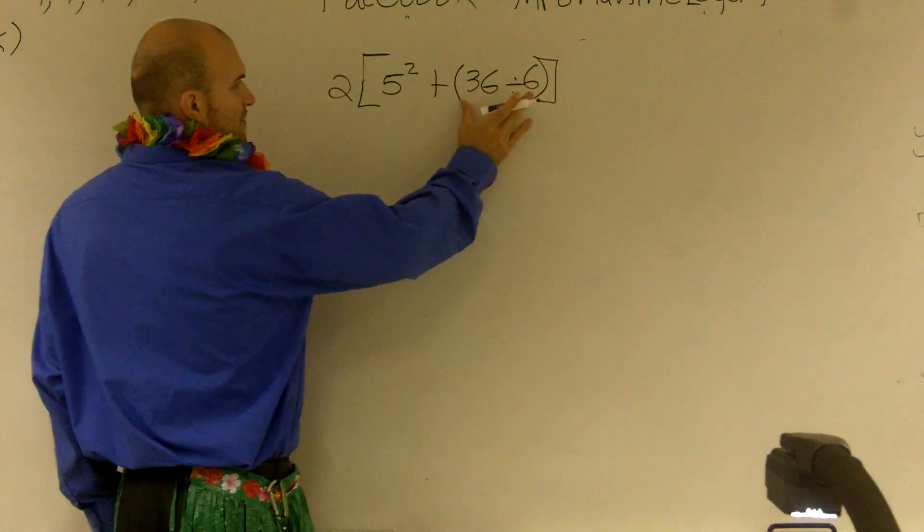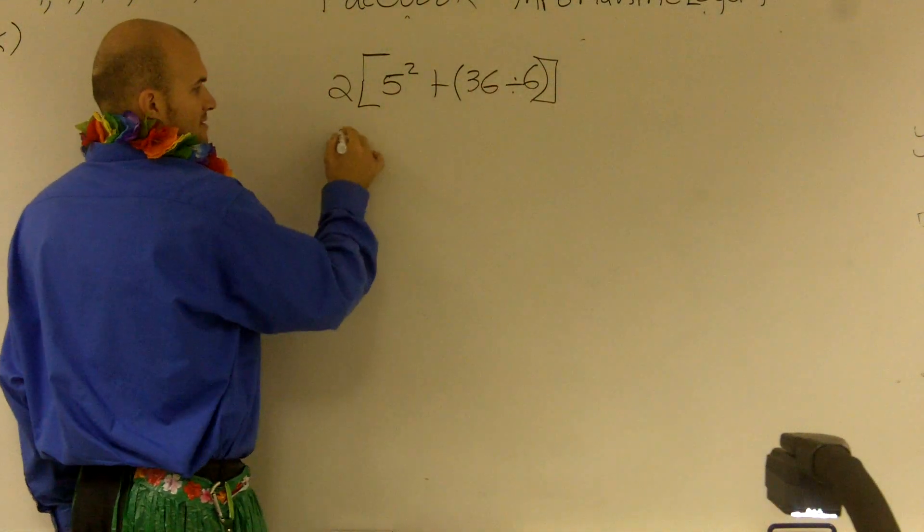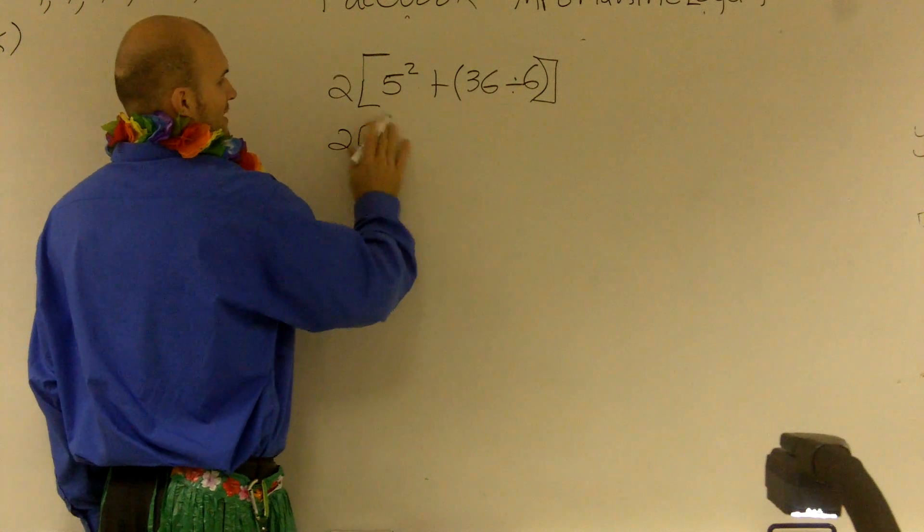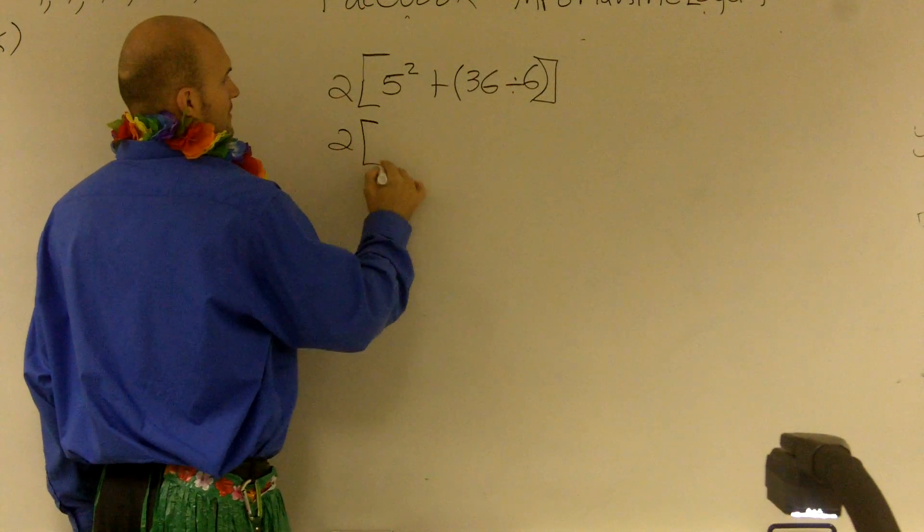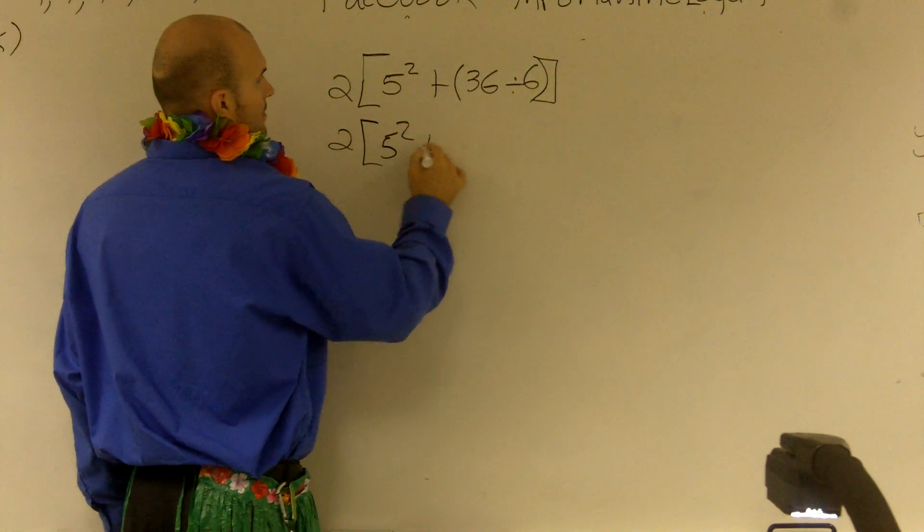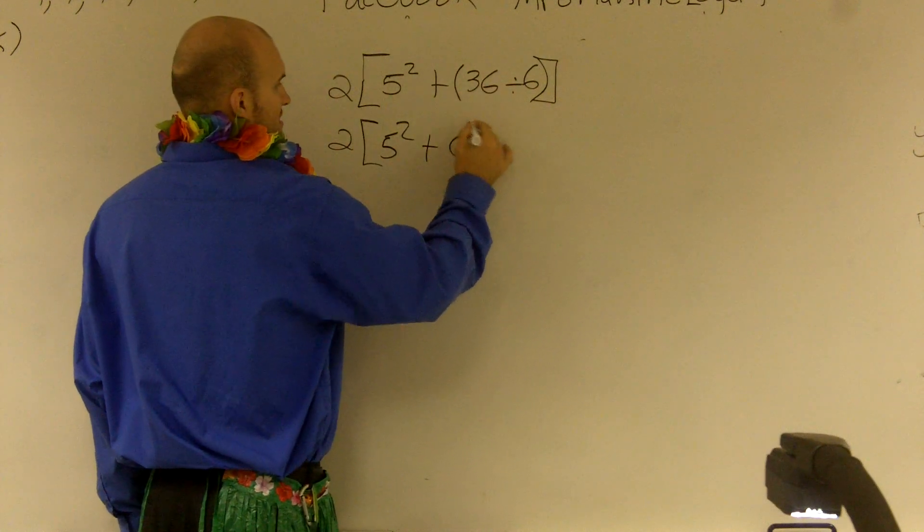So to do the innermost parentheses, I have 36 divided by 6. Well, that's going to leave me—that's a horrible bracket—36 divided by 6 is going to leave me 6.